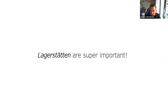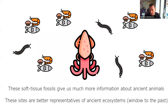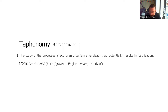Lagerstätten are super important because not only do they preserve animals that wouldn't normally be preserved — giving us a lot more information about ancient animals — but they also give us a lot of information about the ecosystems that existed in the past, because we get a much wider range of organisms being preserved. There is a complete sub-science within paleontology called taphonomy. Taphonomy comes from ancient Greek and means the study of burial — it's basically the study of everything that happens to an animal from the moment it dies all the way up to it being discovered by a human being as a fossil.